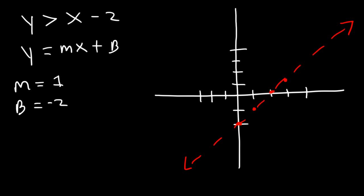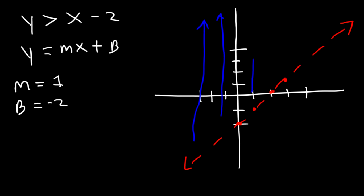Notice that y is greater than the function, so we're going to shade above the line rather than below it. Everywhere above it, we're going to shade. And that's how you can graph it.